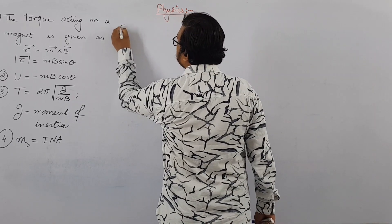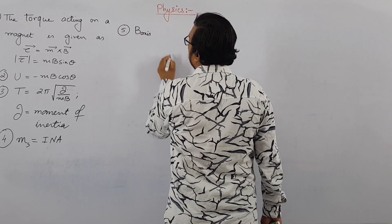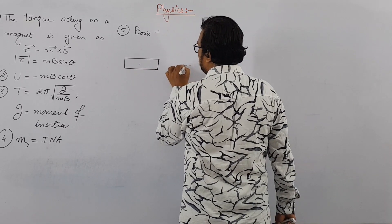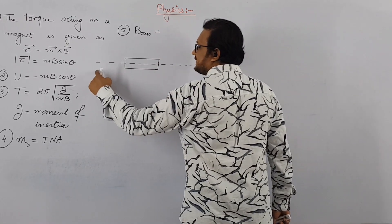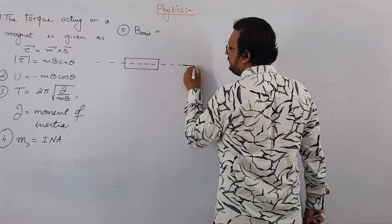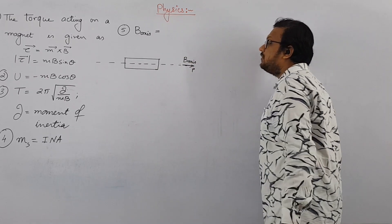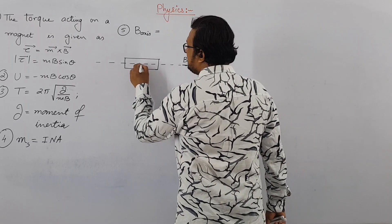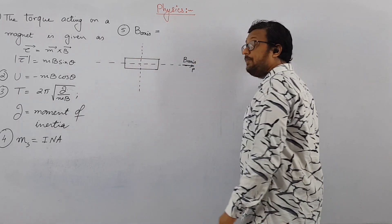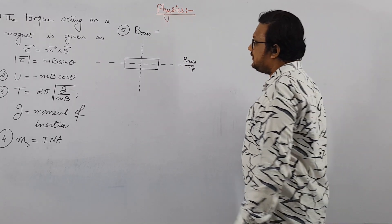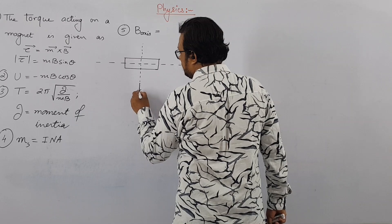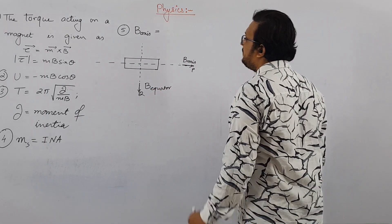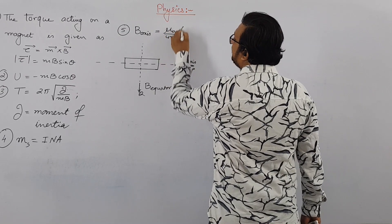The magnetic field along the axis of a bar magnet is given as B_axis equal to mu_0 over 4 pi times 2M by r cubed. Here R is the distance from the center of the bar magnet to the point where we want to find the field, and this formula applies when R is much greater than L, where L is the half-length of the magnet. For a point on the equatorial line — perpendicular to the magnet's length — the magnetic field is B_equator equal to mu_0 over 4 pi times M by r cubed.